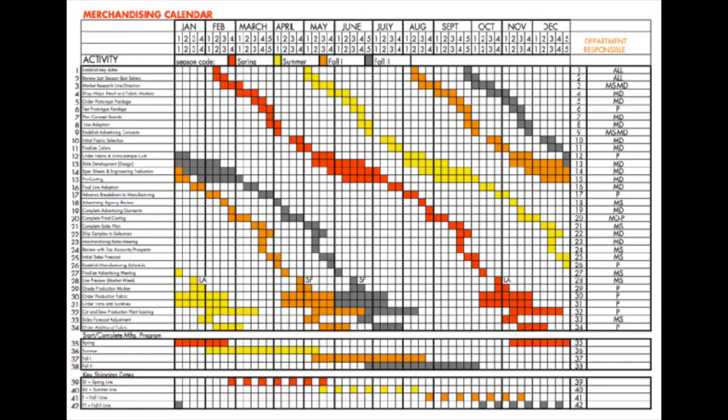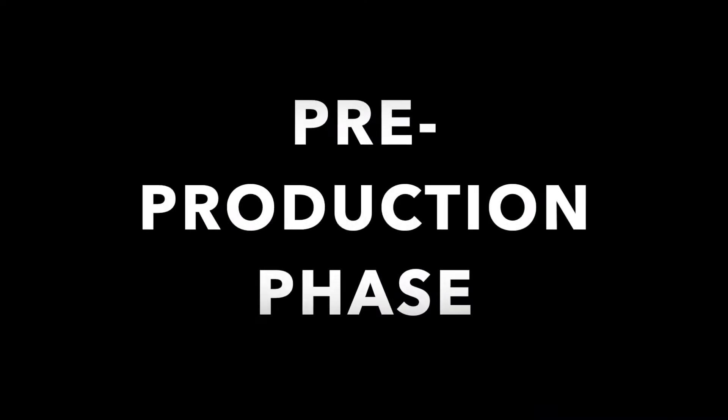Normally a ready-to-wear clothing line has four different seasons per year: spring, summer, pre-fall, and fall. At some point a technical designer works on four overlapping seasons at the same time.